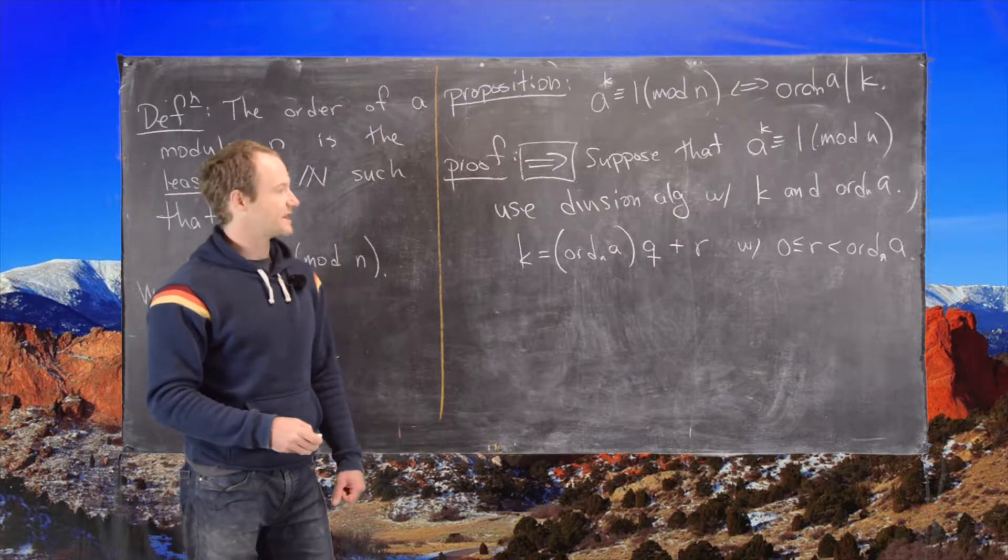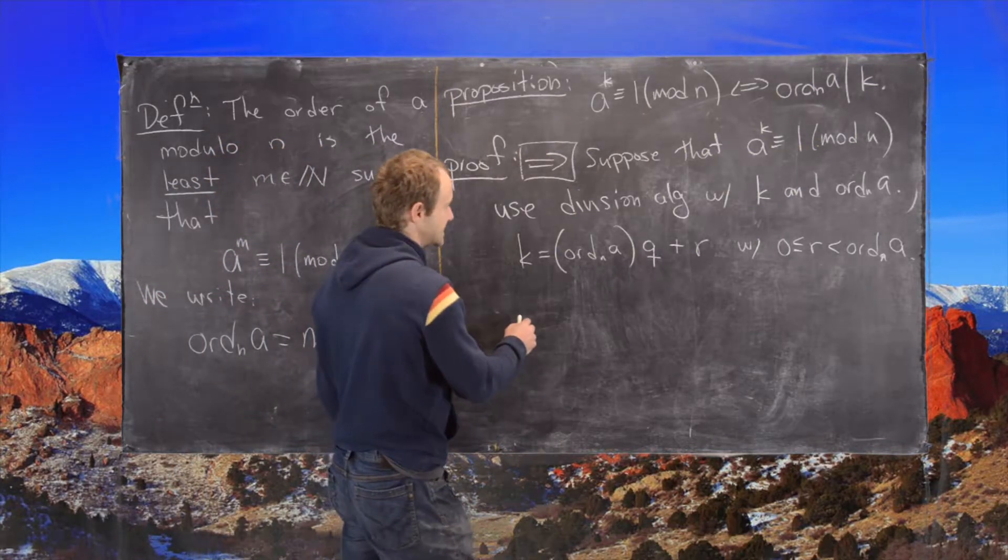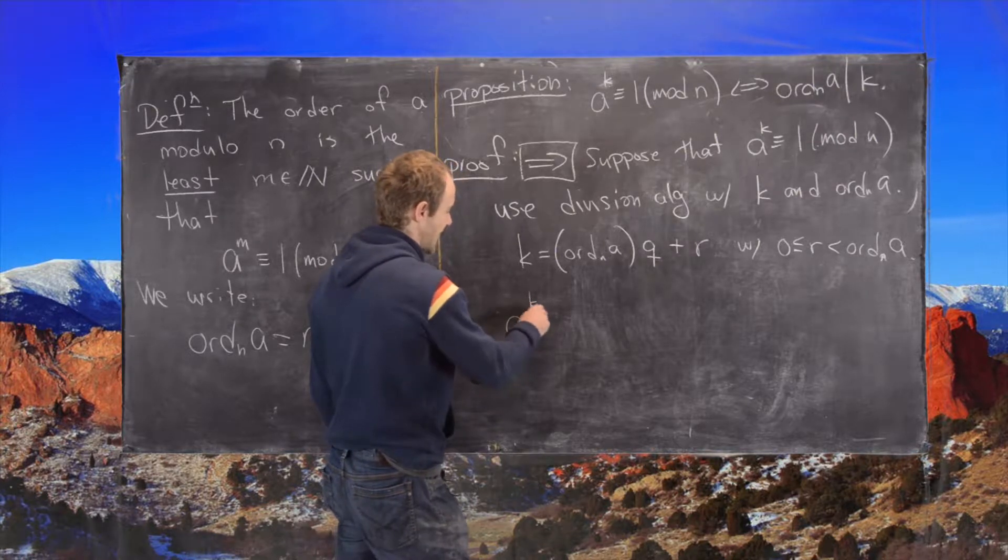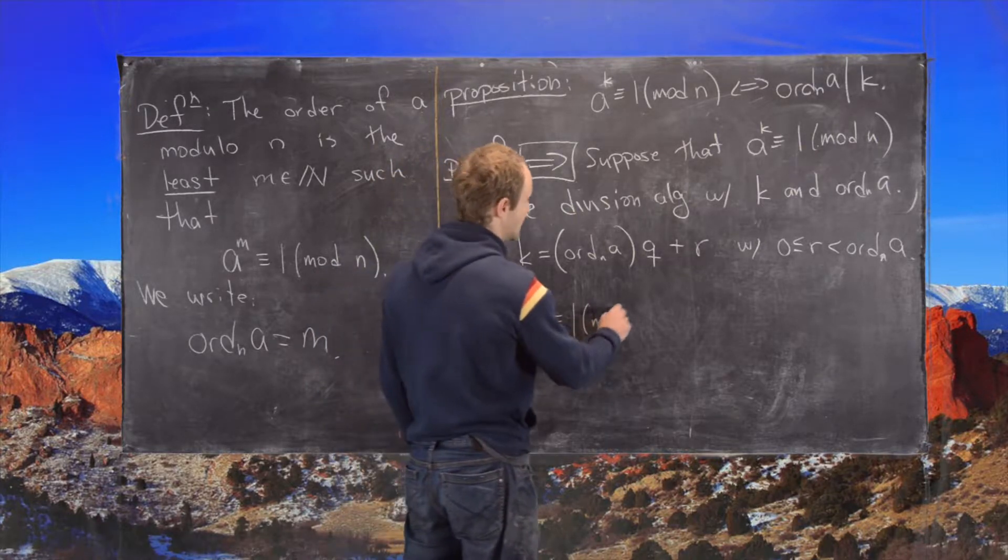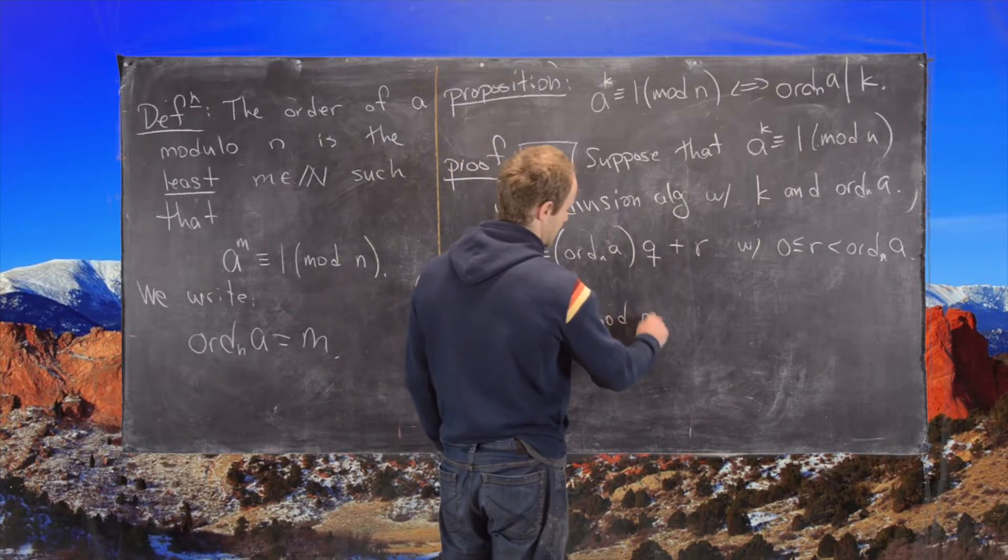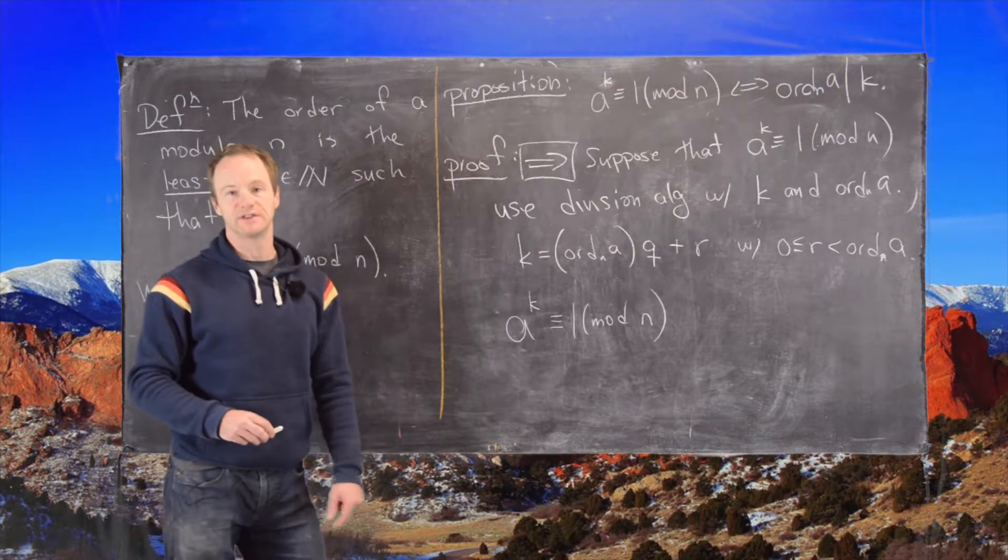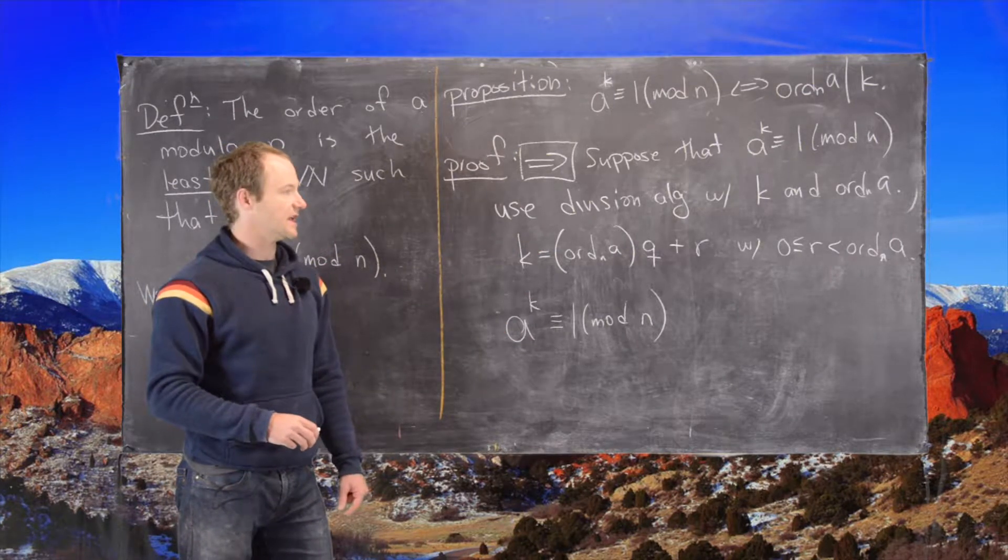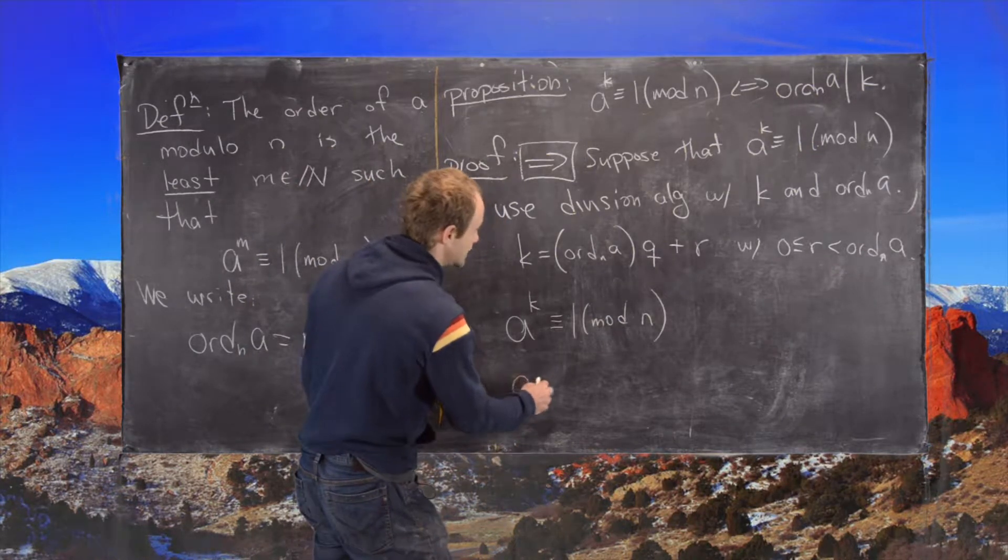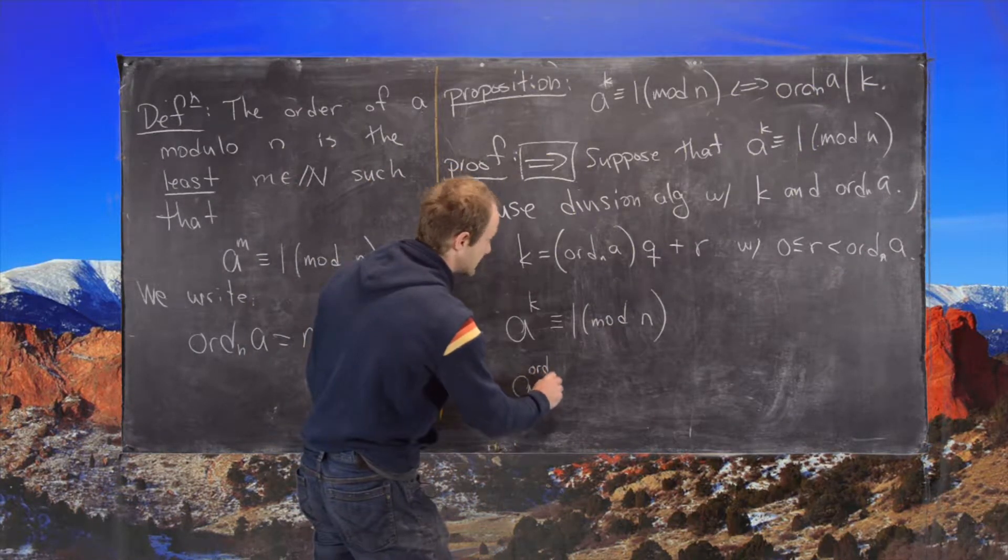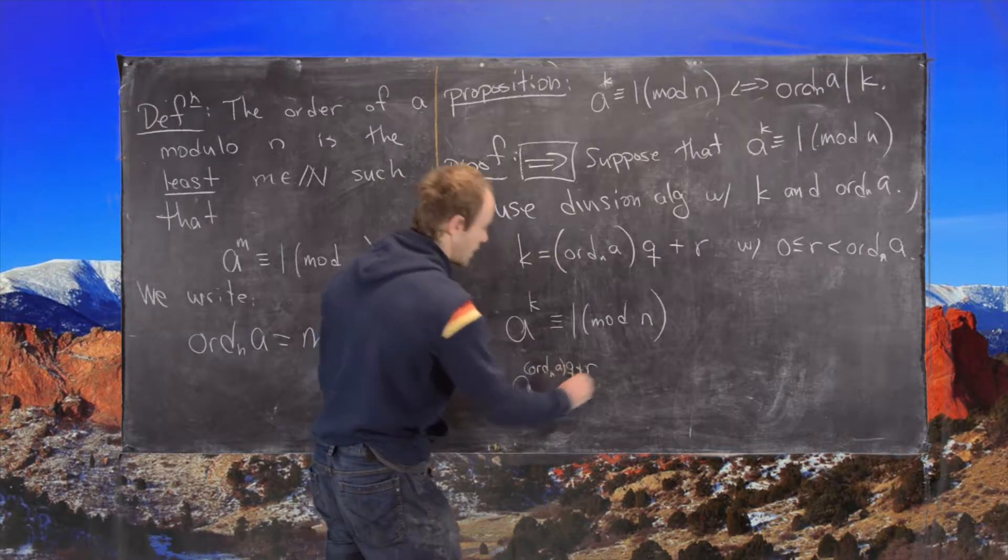Good. And so the next thing that we want to do is use the following. So now we can take a to the k, which we know that that is congruent to 1 mod n by our assumption. And we can rewrite a to the k using this decomposition in the division algorithm. So that means we can write a to the ord_n(a) times q plus r.